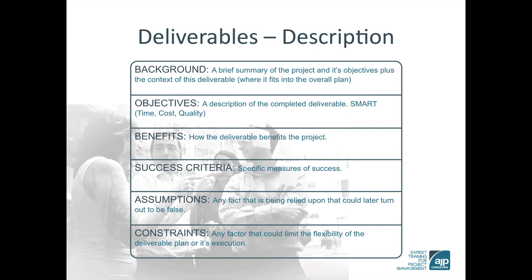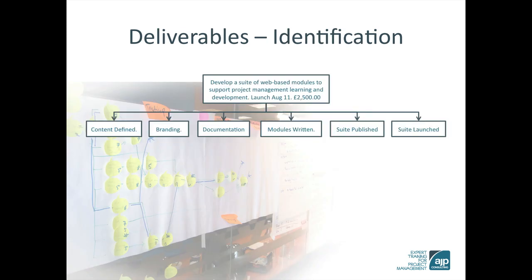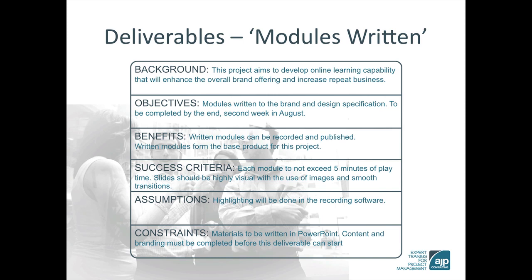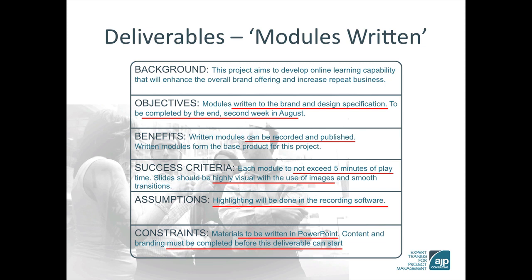We've looked at how to decompose a deliverable from the project objective and how to describe one. Let's look at an example. A brief view of our deliverables, and for an example we shall describe modules written. This is what a deliverable description looks like. Look at the amount of quality information that's contained here, illustrated with the red underlining.